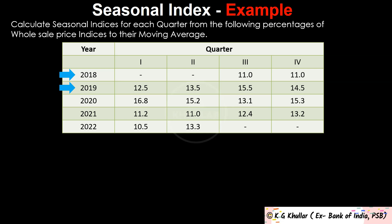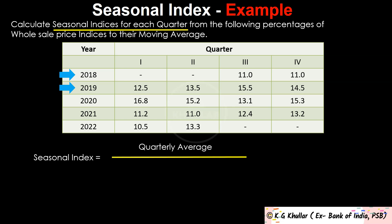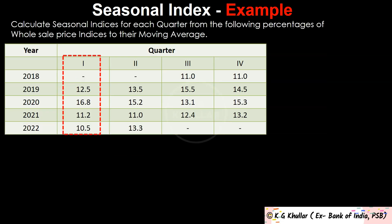The examiner will ask you the seasonal index for each quarter. The formula to calculate seasonal index for any quarter is: quarterly average divided by average of quarterly averages, multiplied by 100. So for the first quarter, the total will be 12.5 plus 16.8 plus 11.2 plus 10.5, which equals 51.0. The quarterly average for the first quarter is therefore 51 divided by 4, which equals 12.75.